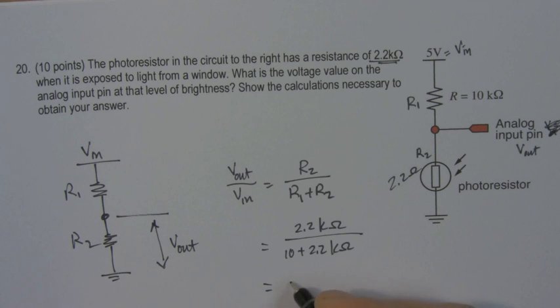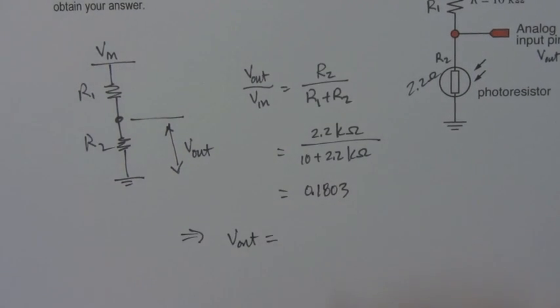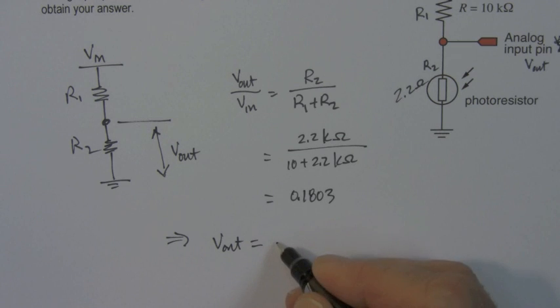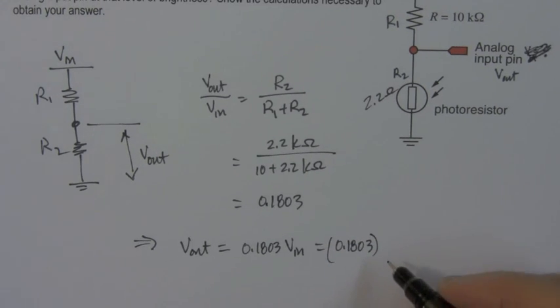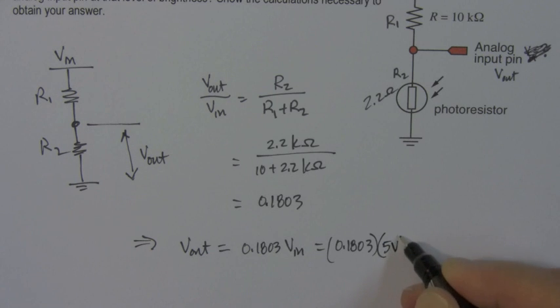We do the analysis. To punch it into the calculator, we get 0.1803. So VOUT is equal to 0.1803 times VIN. VIN is 5. This is 0.1803 times 5 volts or 0.9016.